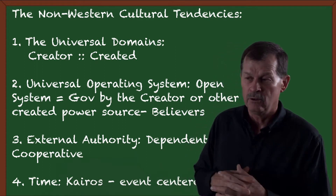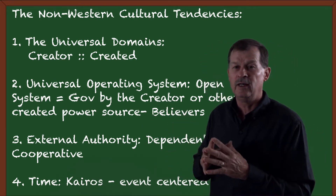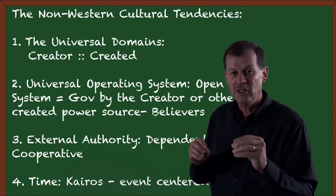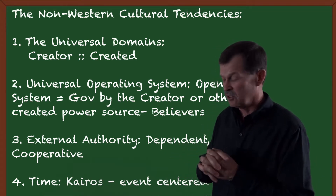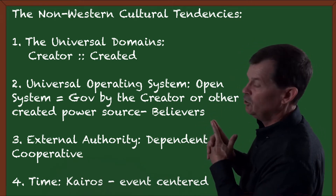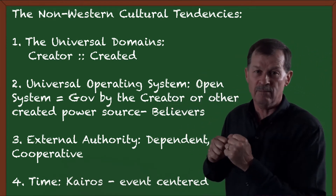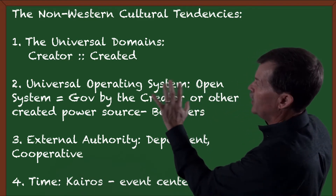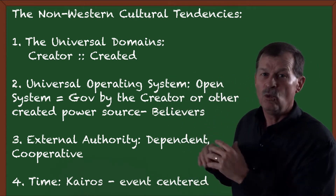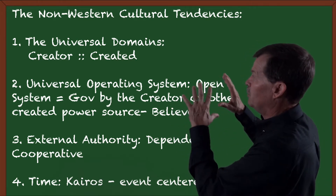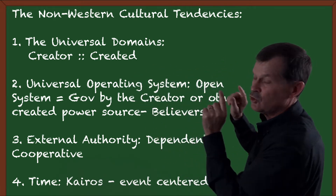So what are some of those non-Western cultural tendencies from the 21? I've listed four here that are perhaps more important or can be singled out as influencing the present topic on the origin of the fossil record. First, the universal domain of the non-Western is the creator and the created, with no separation between them. In other words, the creator is involved with and present within his creation — whether it be physical or spiritual, whether it be powers or principalities or thrones — they are all created and the creator himself is within that same realm.